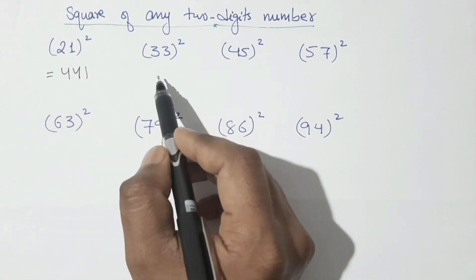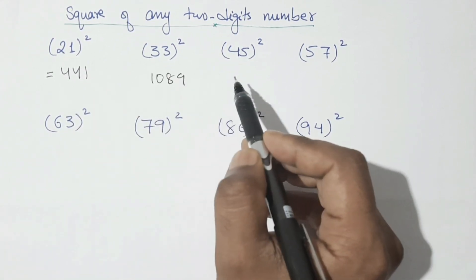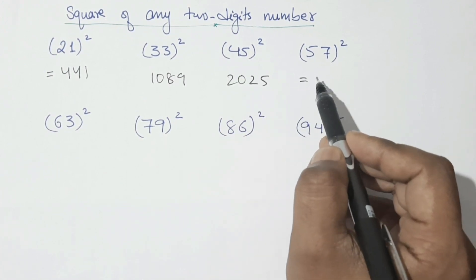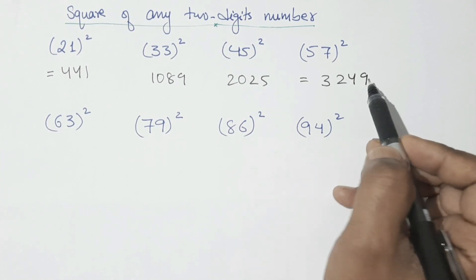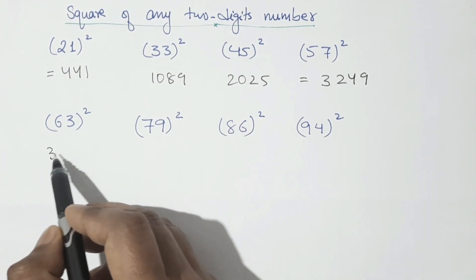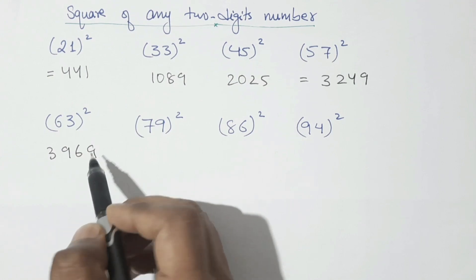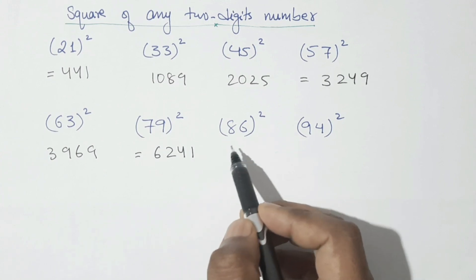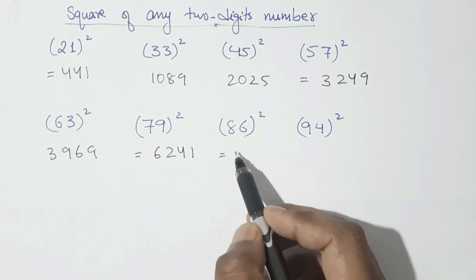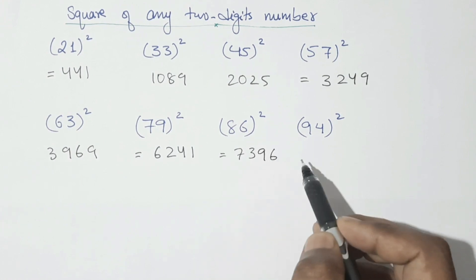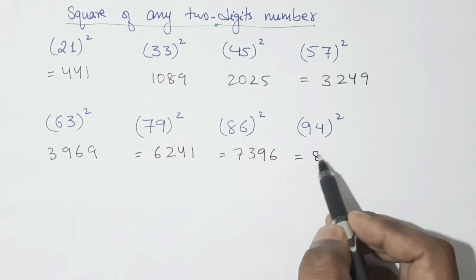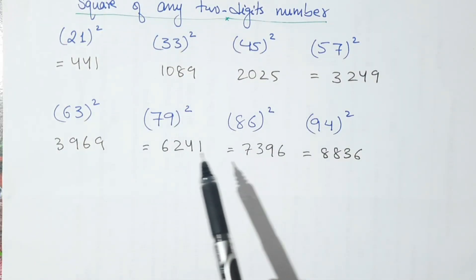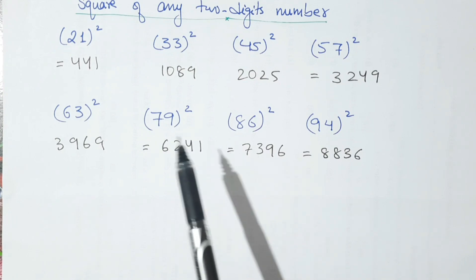So first one is 21 square — its square is 441. 33 square is 1089. 45 square is 2025. Similarly, 57 square is 3249. 63 square is 3969. 79 square is 6241. Similarly, 86 square is 7396 and 94 square is 8836. Here I calculated the square of all these numbers within a few seconds.